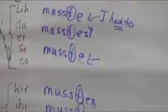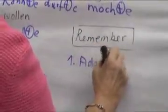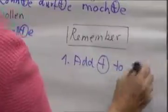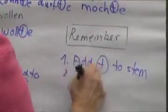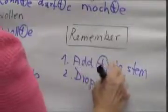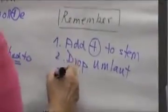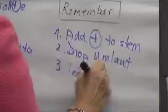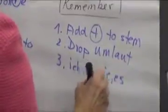So what did we learn? What do we need to remember? The first thing is we add the t to the stem. And then we drop the umlaut. And the third one: ich and es end in e.